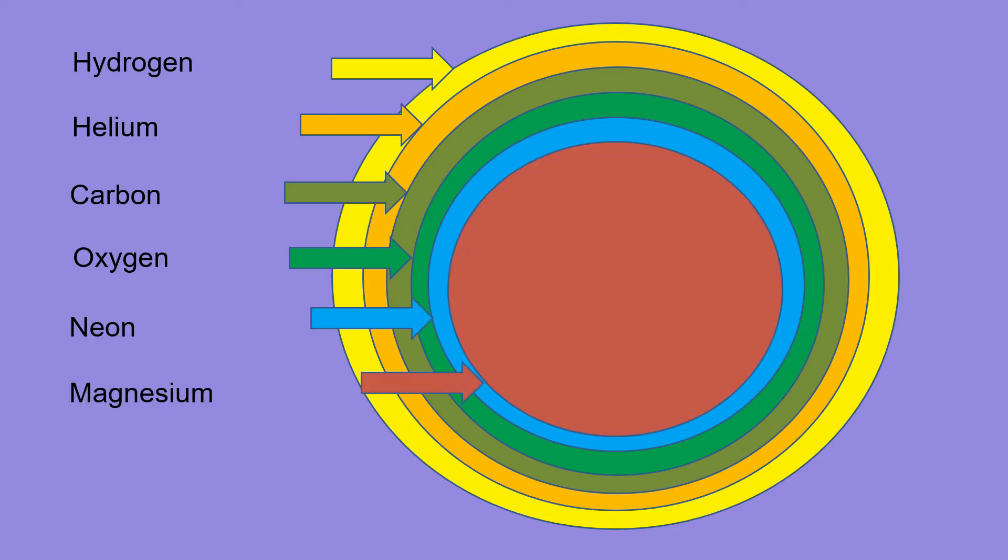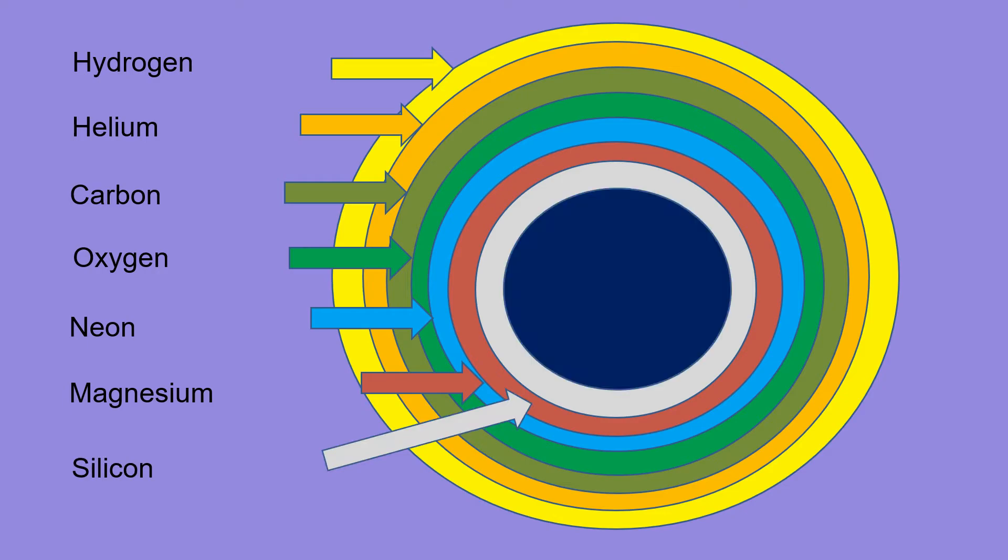Then we have carbon, which led to oxygen, which produced neon, which yielded magnesium. Then silicon, and finally iron in its core.